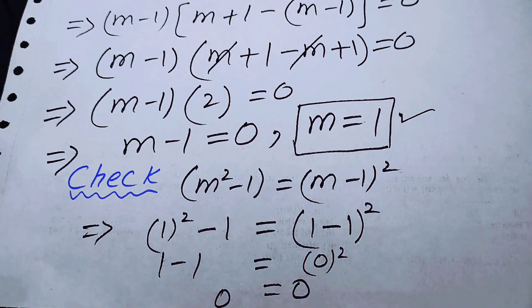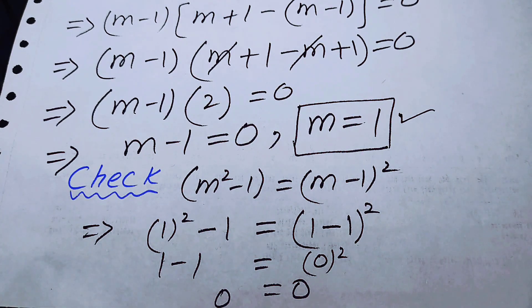So m equals one is the final solution of the given nice equation. Thank you so much for watching this video. Please subscribe to my channel for more exciting videos.